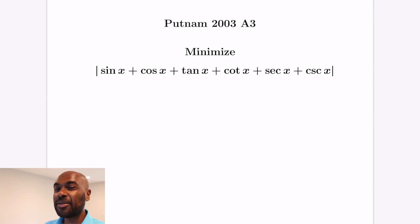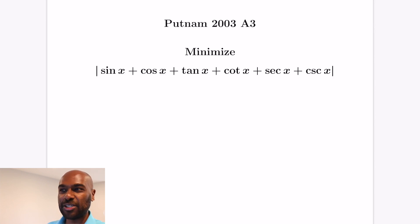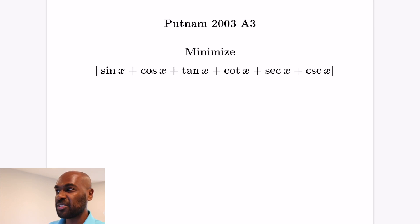In today's video we're going to look at Putnam 2003 number A3, which is an interesting problem involving minimizing the absolute value of the sum of elementary trigonometric functions. The question asks to minimize the absolute value of sin x + cos x + tan x + cot x + sec x + csc x.